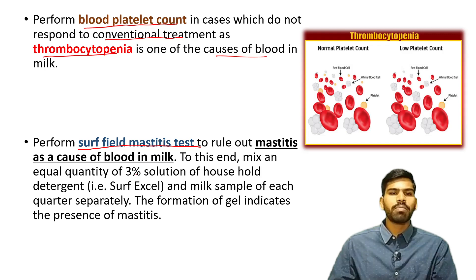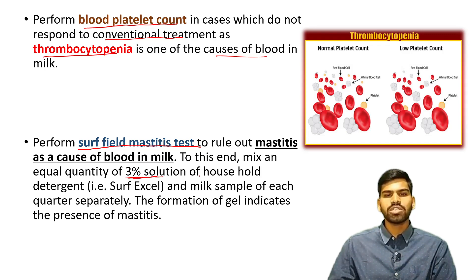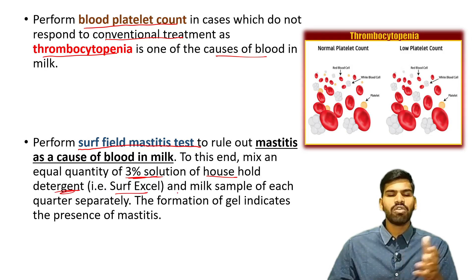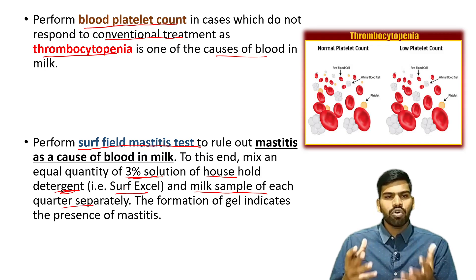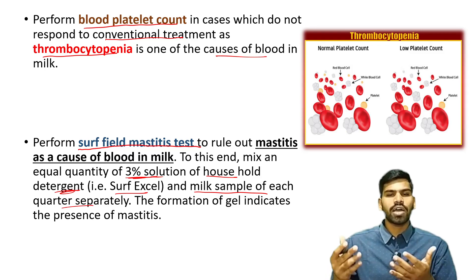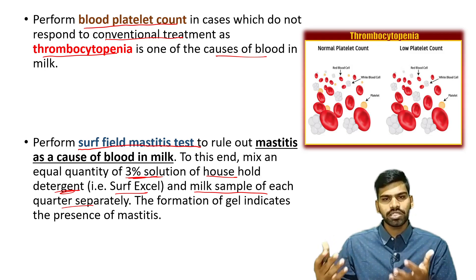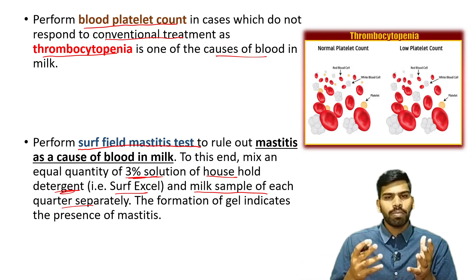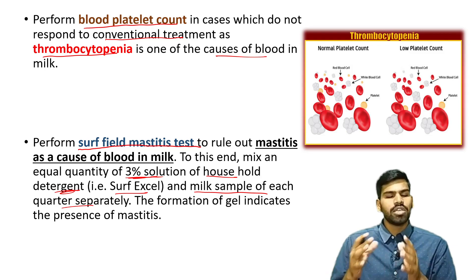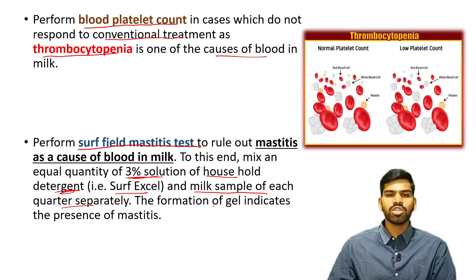How to perform the Surf Feed Mastitis Test? Use a 3% solution of household detergent — such as Surfex, Wheel, or similar — and collect milk samples from each quarter separately. Remember that the cow's udder has 4 quarters; collect milk from each quarter separately and perform the test separately. The formation of gel indicates the presence of mastitis.